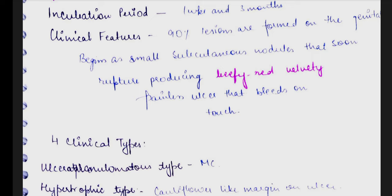90% of lesions are in the genital area, as we have already seen that it is an ulcerative lesion of the genitals. In the beginning, it presents as a subcutaneous nodule, which then forms a painless ulcer that bleeds on touch.